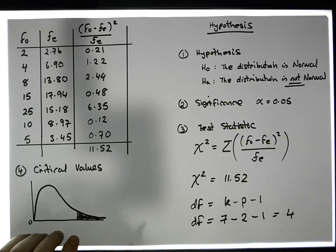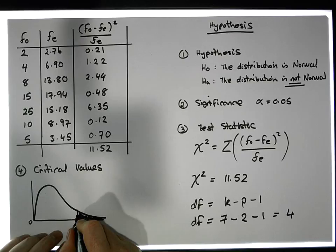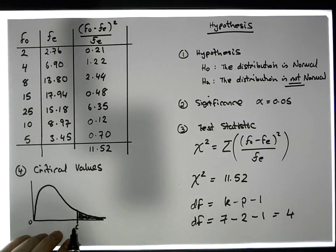So the question is, what's this critical value here? What is this value here that has a certain amount of area in this tail?